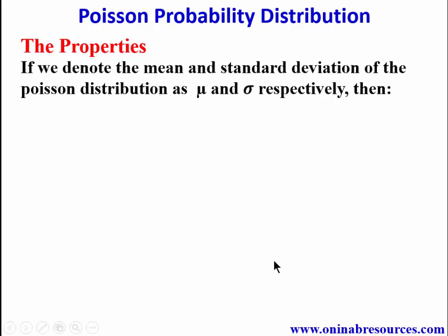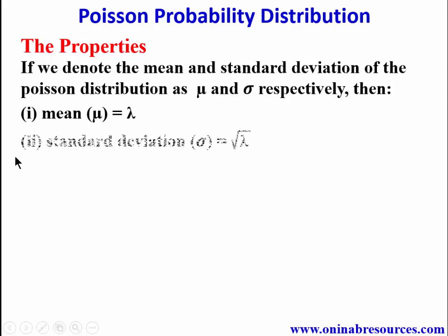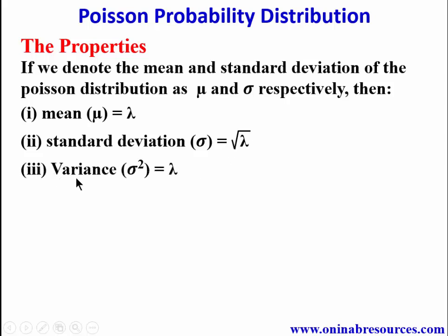If we denote the mean and standard deviation of the Poisson distribution as μ and σ respectively, then the mean μ = λ, the standard deviation σ = √λ, and the variance σ² = λ.